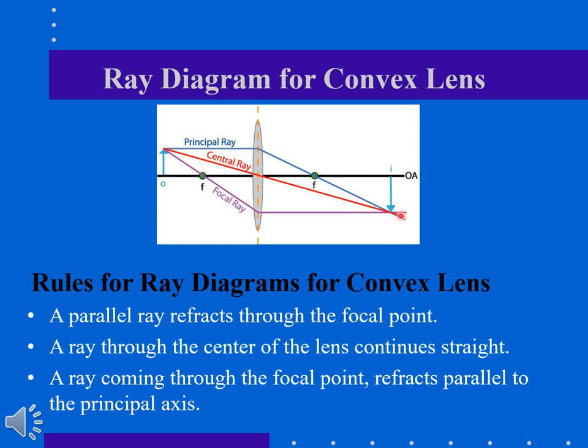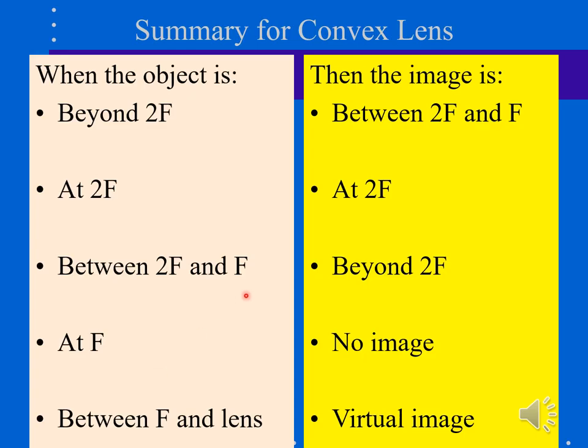You will be getting enlarged or shrunk, flipped or erect or inverted images. This is what happens for each object: if it's beyond the 2f, then the image is between 2f and f on the other side, which is the focal point. At 2f at 2f, between 2f and f, and beyond - and no image. But it's important to review them and know that we need this information to understand the parameters or the image that we are dealing with.